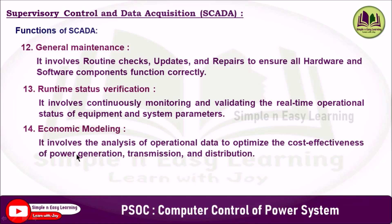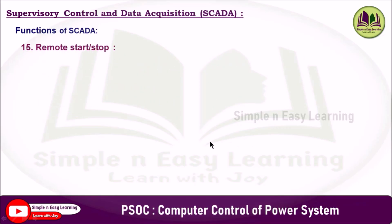The fourteenth function is economic modeling, which involves analyzing operational data to optimize the cost-effectiveness of power system generation, transmission, and distribution. By using real-time and historical data, SCADA supports decisions related to load forecasting, unit commitment, and economic dispatch. This helps utilities minimize operational costs, reduce energy losses, and improve overall system efficiency while meeting demand and regulatory requirements.